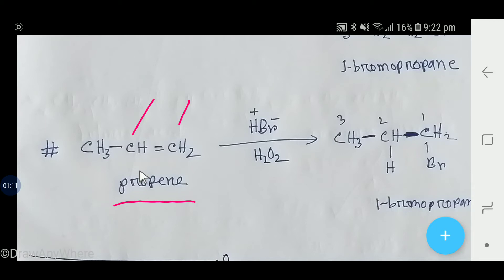If you add hydrogen bromide in presence of hydrogen peroxide, then the negative part will add to the carbon that has maximum number of hydrogen, and the positive part will add to the carbon that has least number of hydrogen. This is anti-Markovnikov rule.